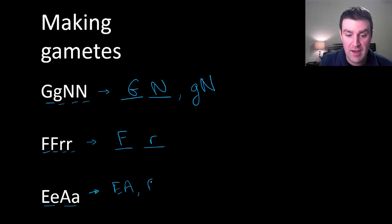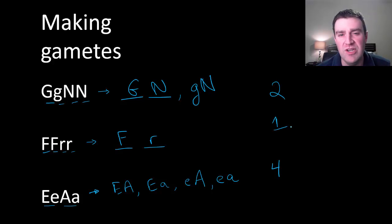So a capital for both, a capital for the E's but a lowercase a, a lowercase e and a capital A, and a lowercase e and a lowercase a. So you'll see that parents can either produce either four, two, or one gamete when you do these types of problems. Let's see if we can do a full workup of two problems to finish this video.